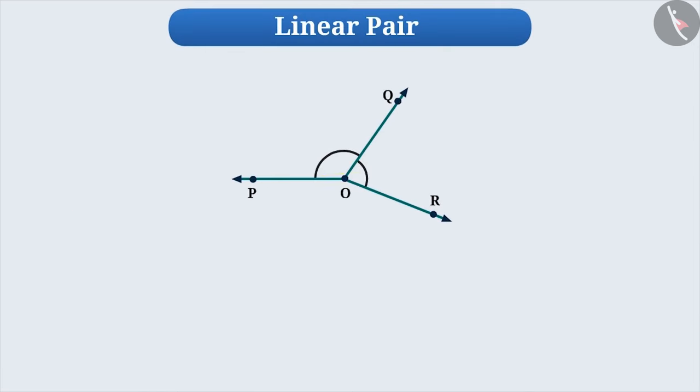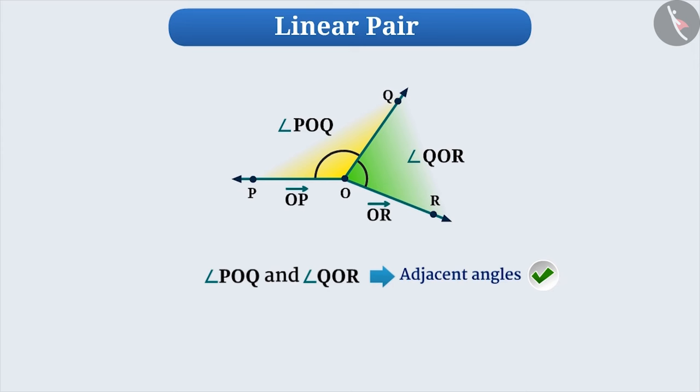If you look at angle POQ and angle QOR, both angles here are adjacent angles, but non-common sides OP and OR are not opposite rays. Therefore, we cannot call these two angles linear pair.